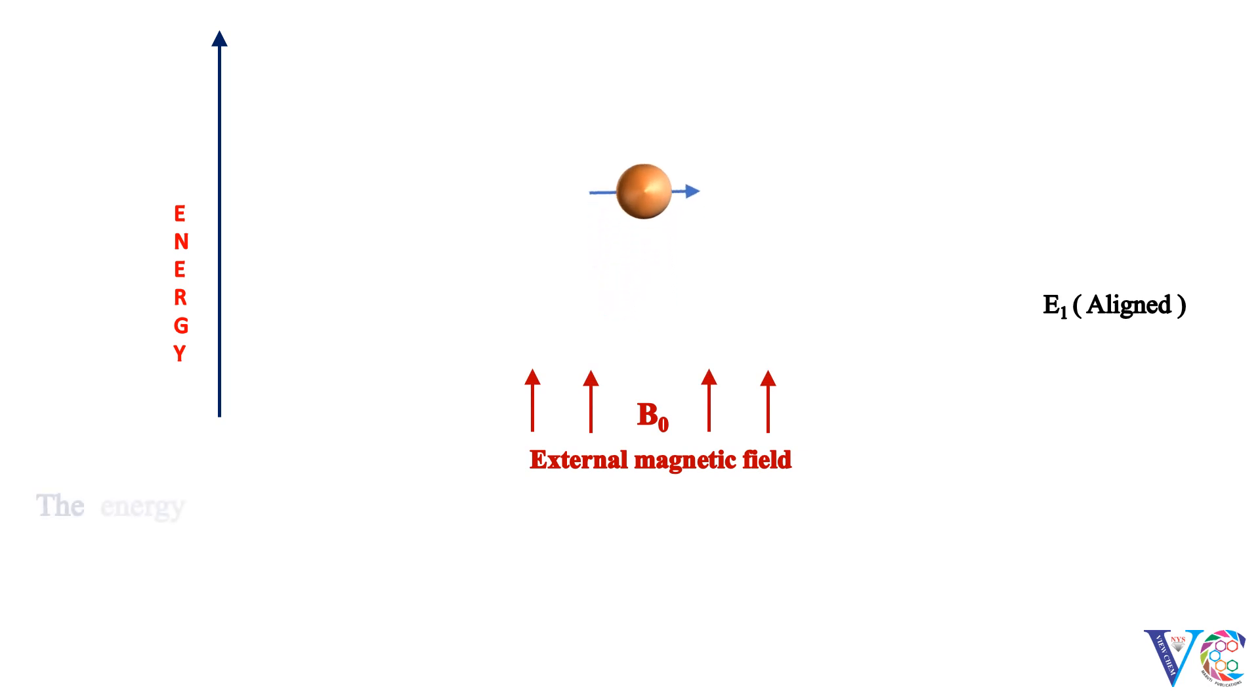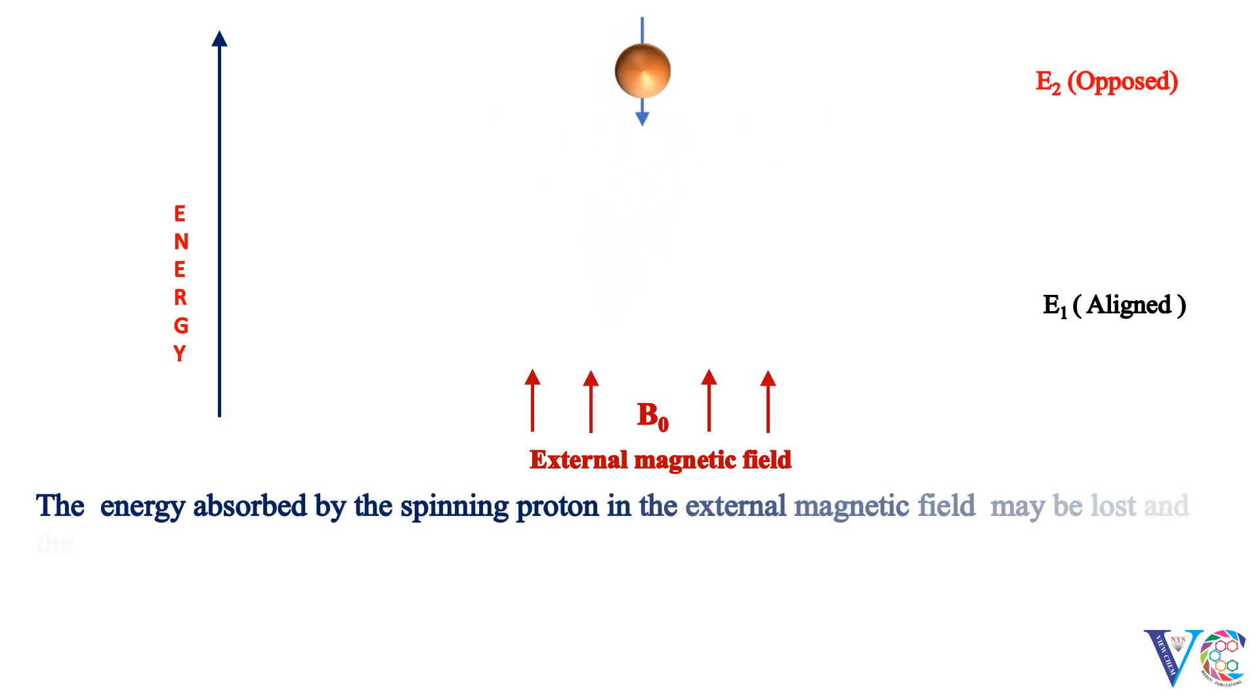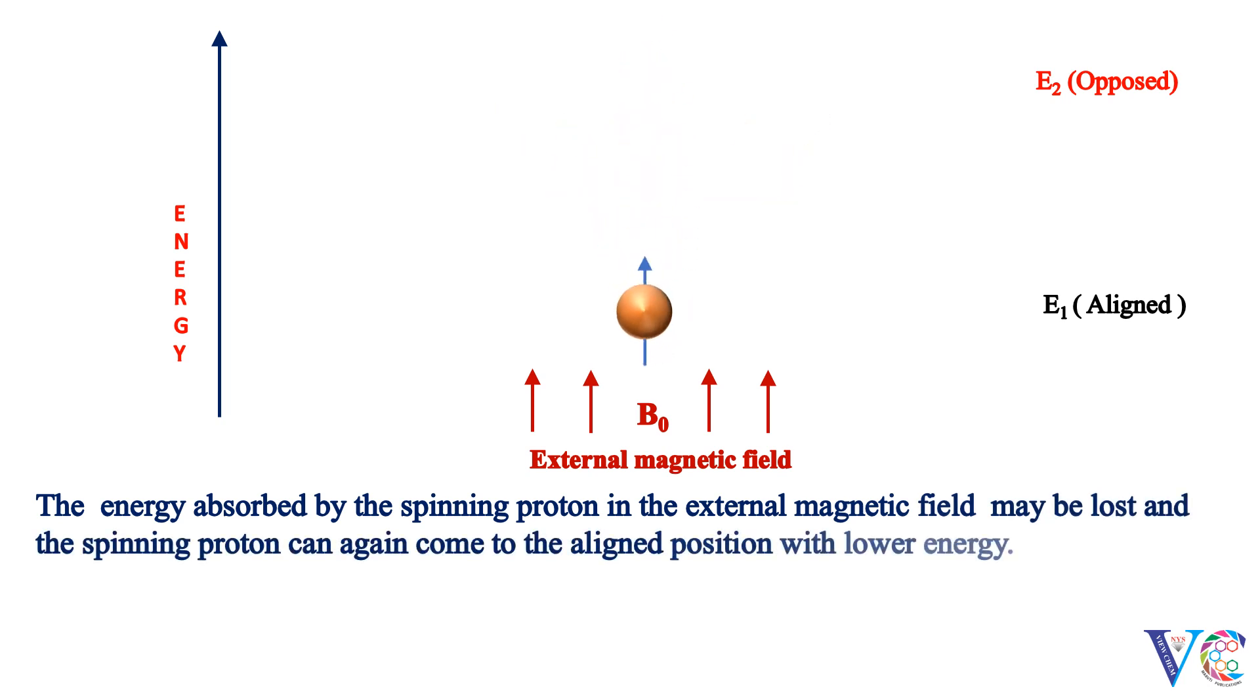The energy absorbed by the spinning proton in the external magnetic field may be lost, and the spinning proton can again come to the aligned position with lower energy.